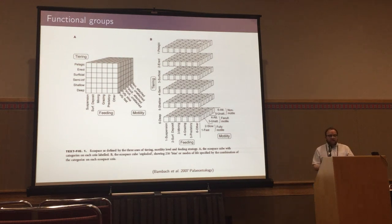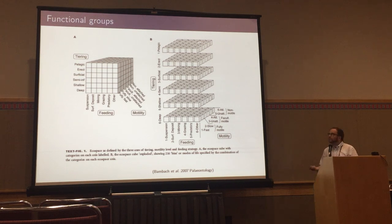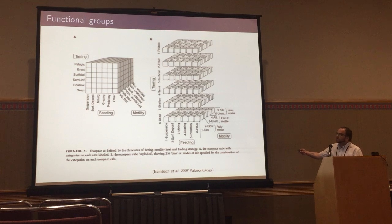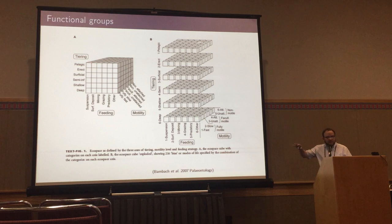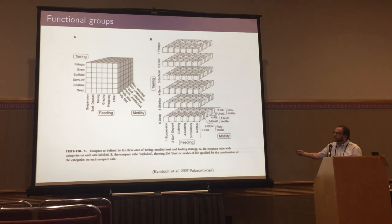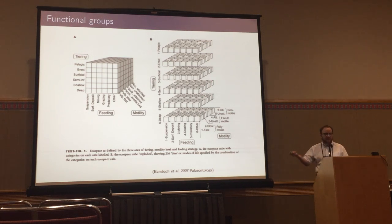I'm going to be talking about mammals in terms of their functional groups. This example is actually for marine invertebrates, but the idea is the same. We define some set of traits which we can use to describe the feeding habit of these invertebrates, their motility, or their tiering — which is how high or low in the water column they are. Species are then assigned to these individual boxes, and the idea is we look at how the structure of these boxes changes over time.